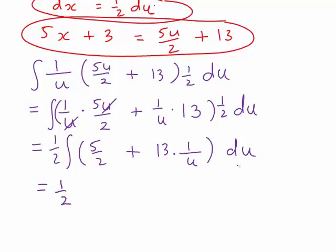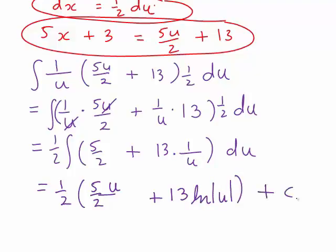The integral of 5 divided by 2 with respect to u is just 5 divided by 2 times u, or 5u divided by 2. Then 13 times 1 divided by u, with 13 being a constant, would just be multiplied by the integral of 1 divided by u, which becomes the natural log of the absolute value of u. And then all of this is plus a constant, c.